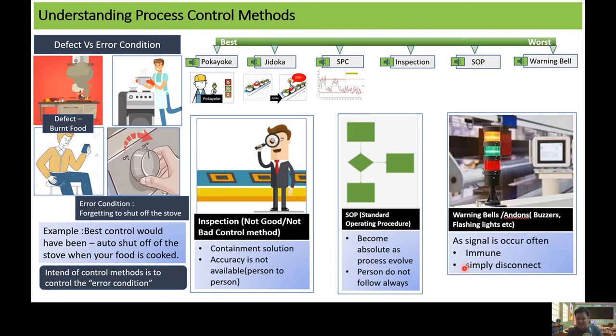And it has been seen that as the signal occurs very often, the people who are working in the manufacturing process become immune or simply disconnect and keep the work going on even when the defect is being highlighted with the help of a warning bell or Andons. So since this control method is highly dependent on human behavior, this is considered to be the worst control method amongst the ones we have discussed in today's video.